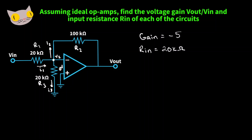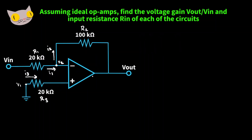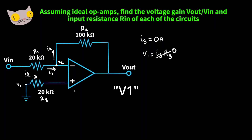We'll do one more problem — will we get the same answers as the previous three? Here's our last circuit. From the diagram, I3 equals zero amps. We can determine the voltage at the non-inverting terminal: V1 equals I3 times R3, and since I3 is zero, V1 is zero. Due to the virtual ground, the potential at the inverting terminal equals the potential at the non-inverting terminal, so both are zero.